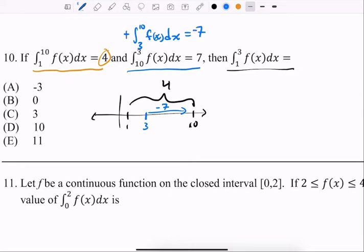And so that means if I multiply both sides by negative 1, 3 to 10 would be a negative 7. Alrighty, so what would this be? What would from 1 to 3 be? Oh man, I kind of messed up my colors, this was supposed to be orange.